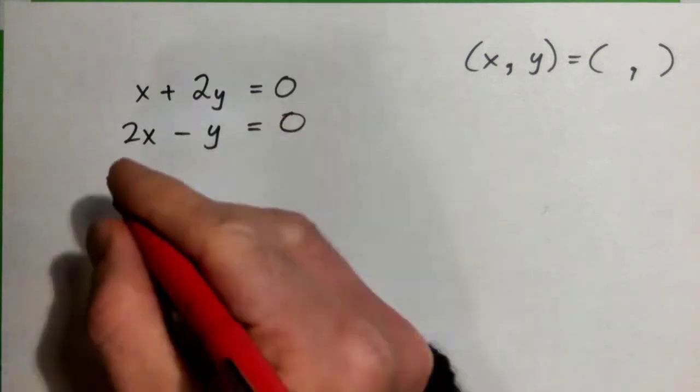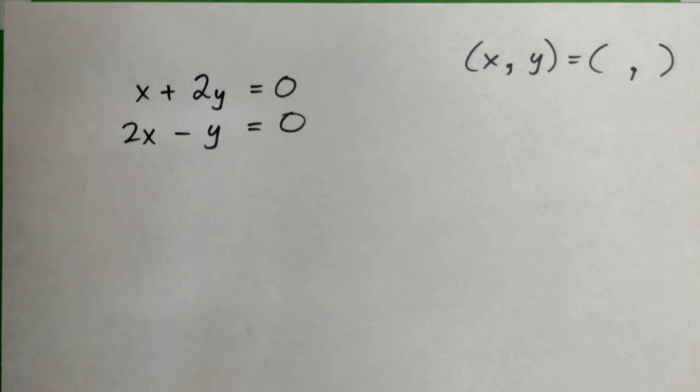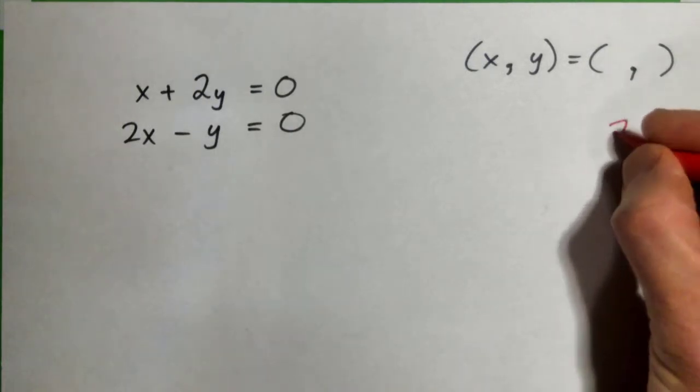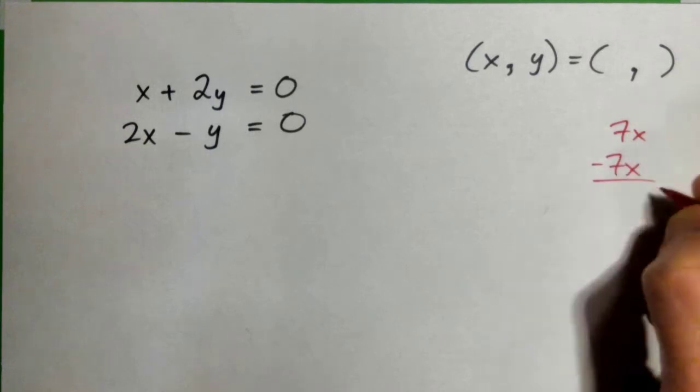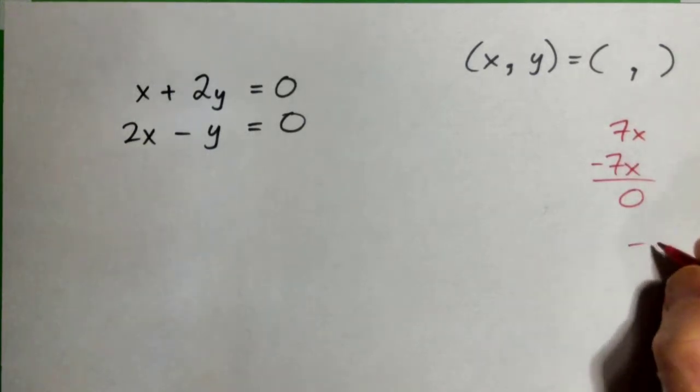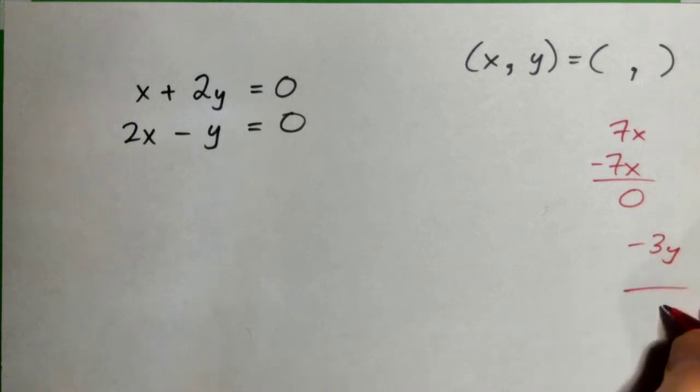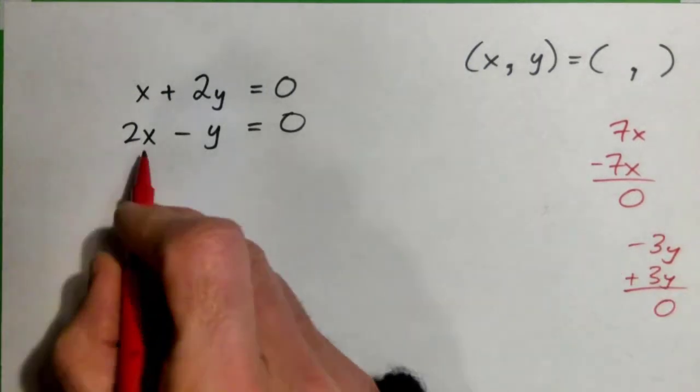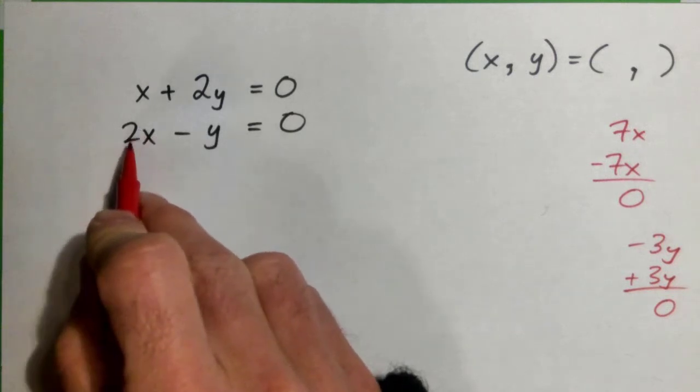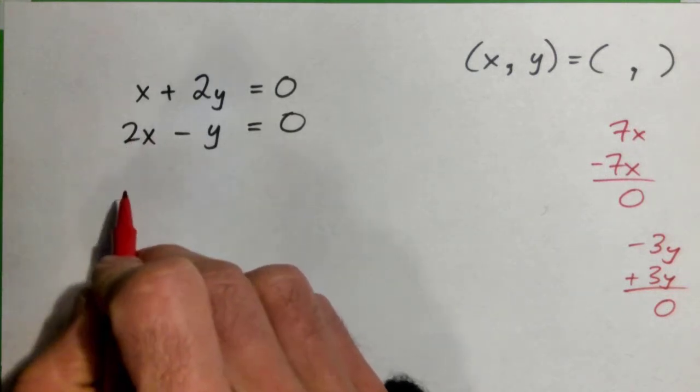Let me just do a few practice ones. If I had a 7x, I could add a negative 7x and that would make zero. Or if I had a negative 3y, what would I add to get zero? Positive 3. So I have a positive 2x, so what do I need to add on to that to get zero?